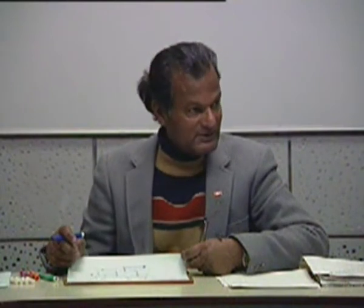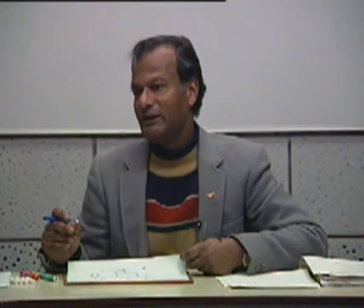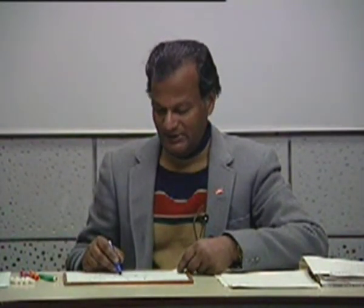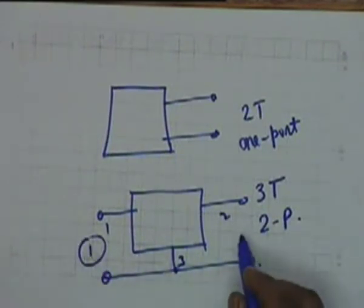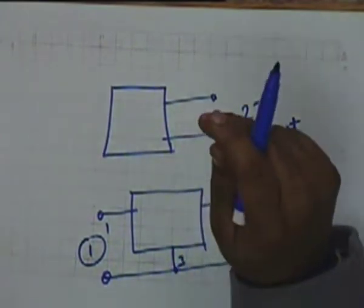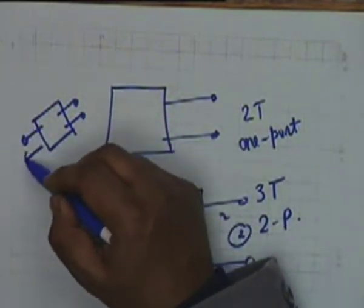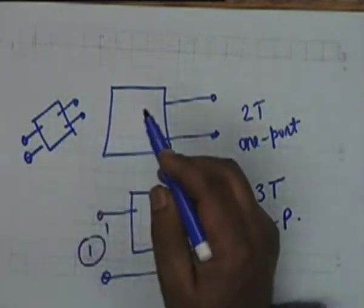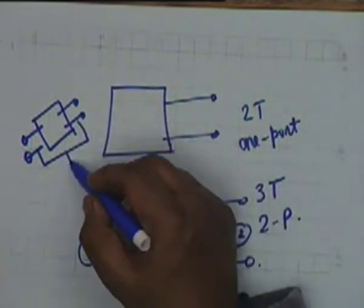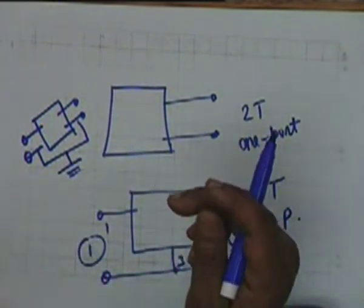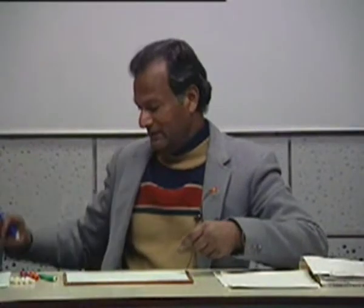The number of terminals depends on whether there are common terminals or not. For example, terminal 3 could be common between port 1 and port 2. A two-port could have exactly four terminals, or it could have three terminals where two are connected—usually to ground. Now, enough of concepts—let us work out a couple of examples.